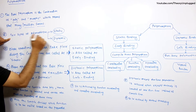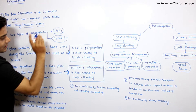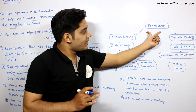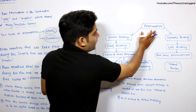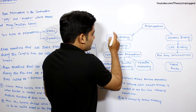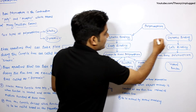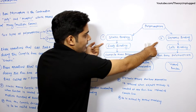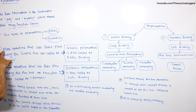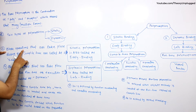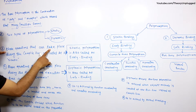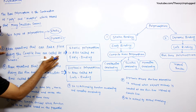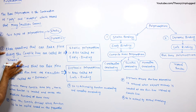There are two types of polymorphism: static and dynamic. As you can see in the diagram, polymorphism has two types — static and dynamic.